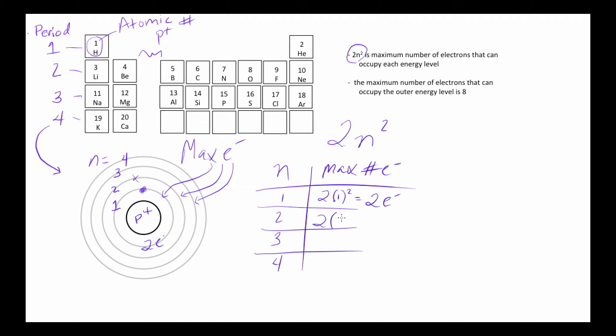Then, if I go out to the second energy level, here n is equal to 2, so 2 squared is 2 times 2. That's 4 times 2. That's 8 electrons. So in the second energy level, I can have a maximum of 8.